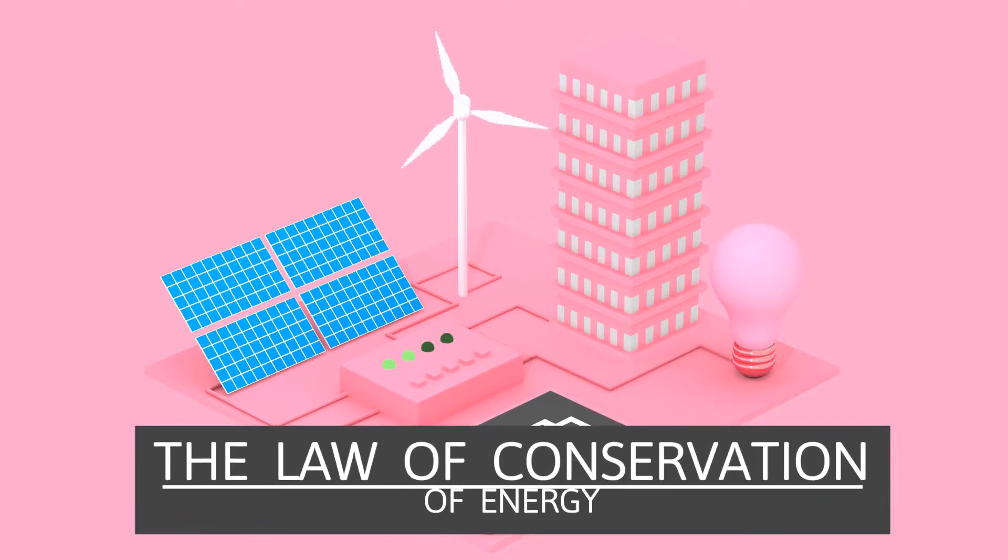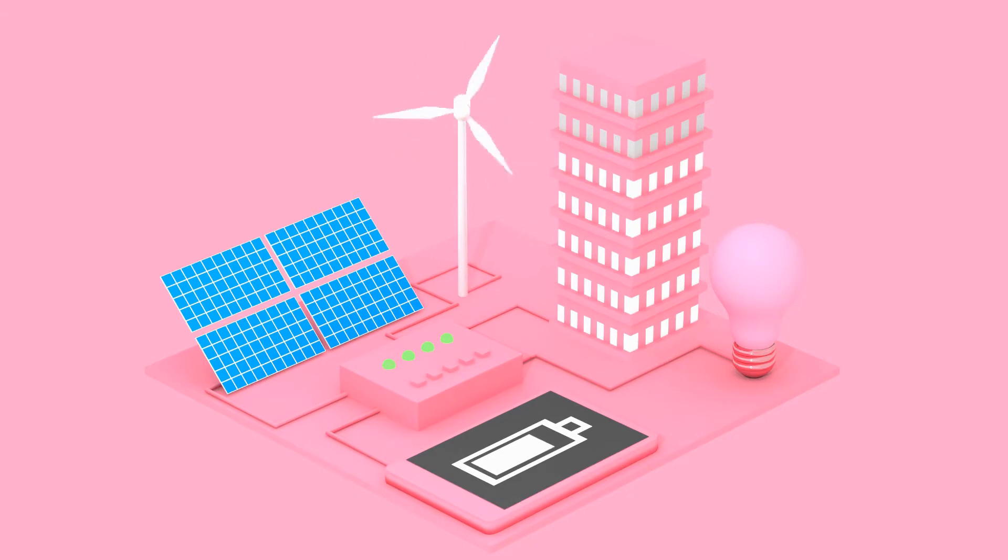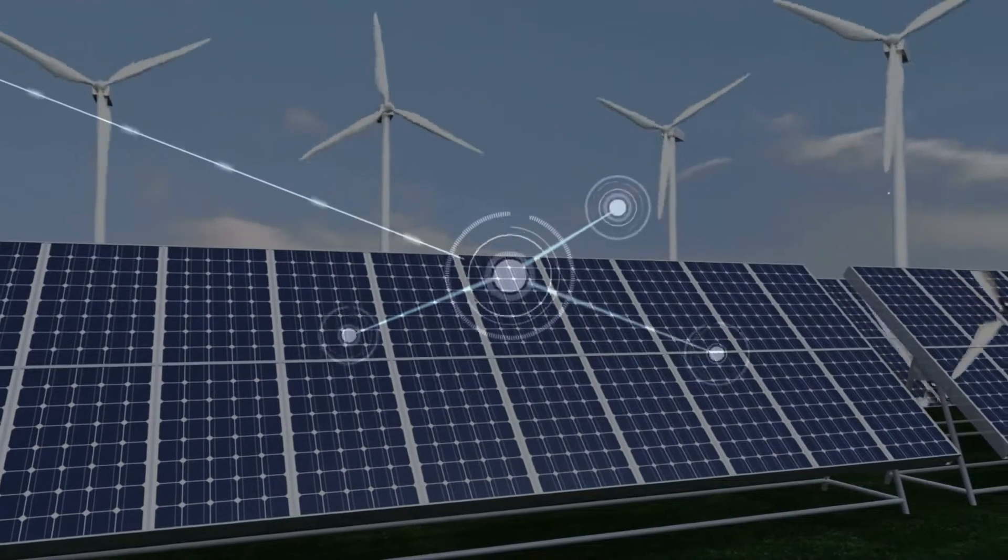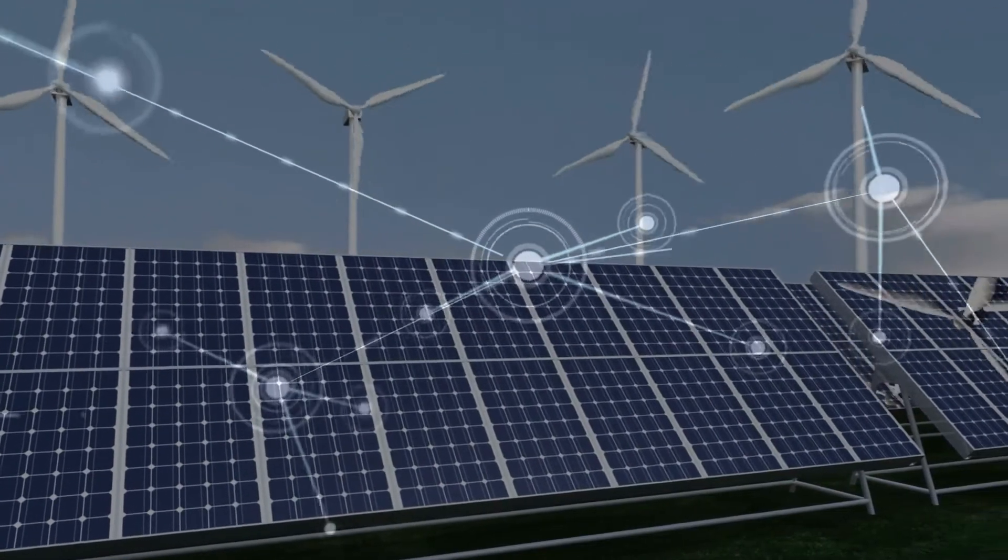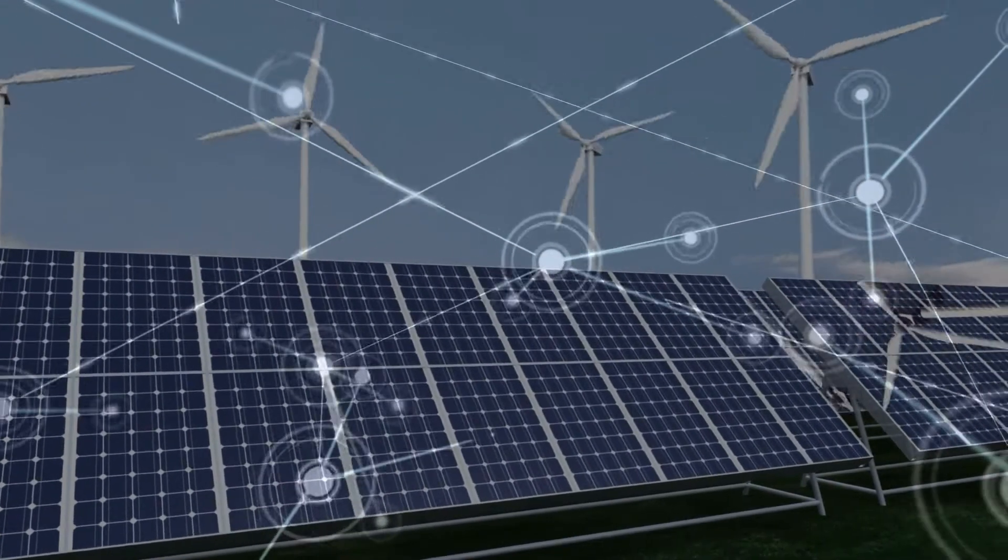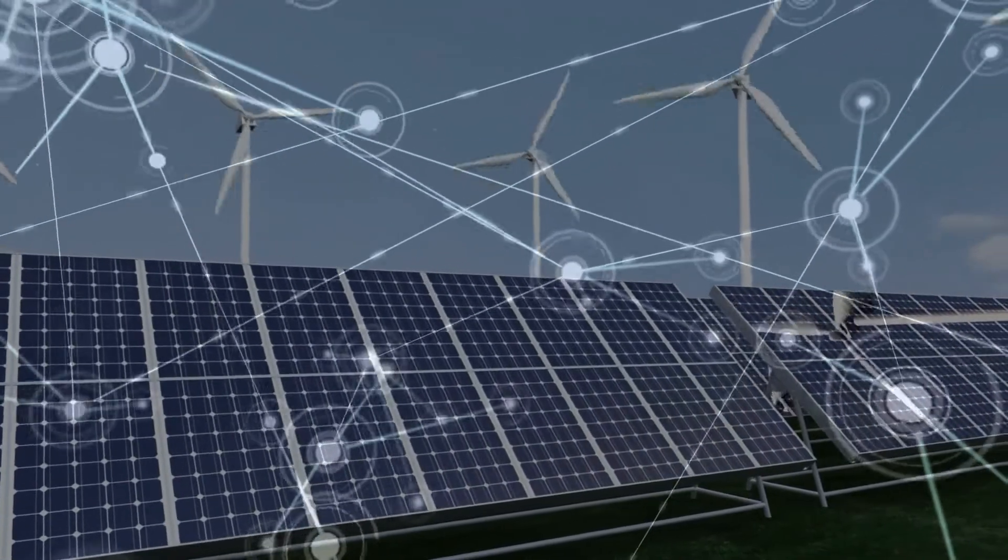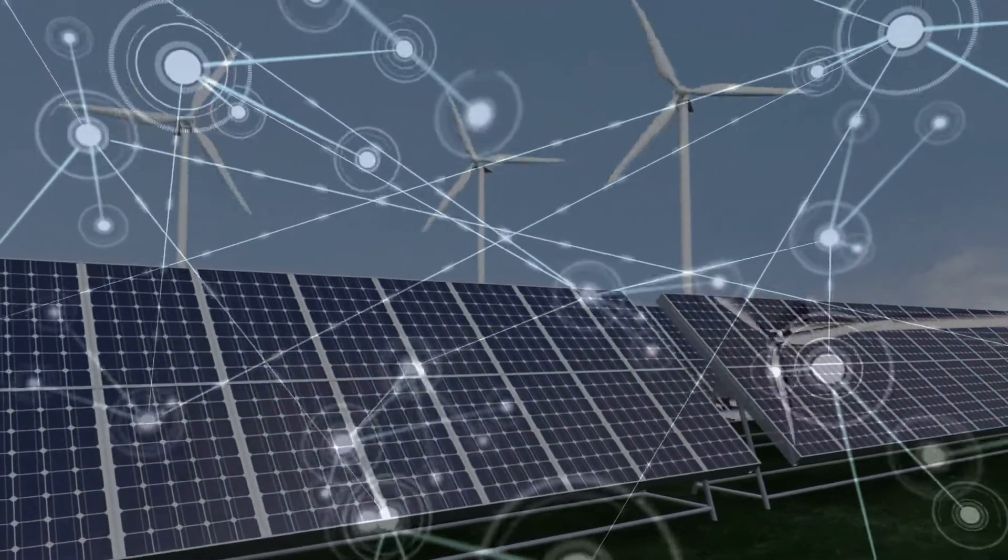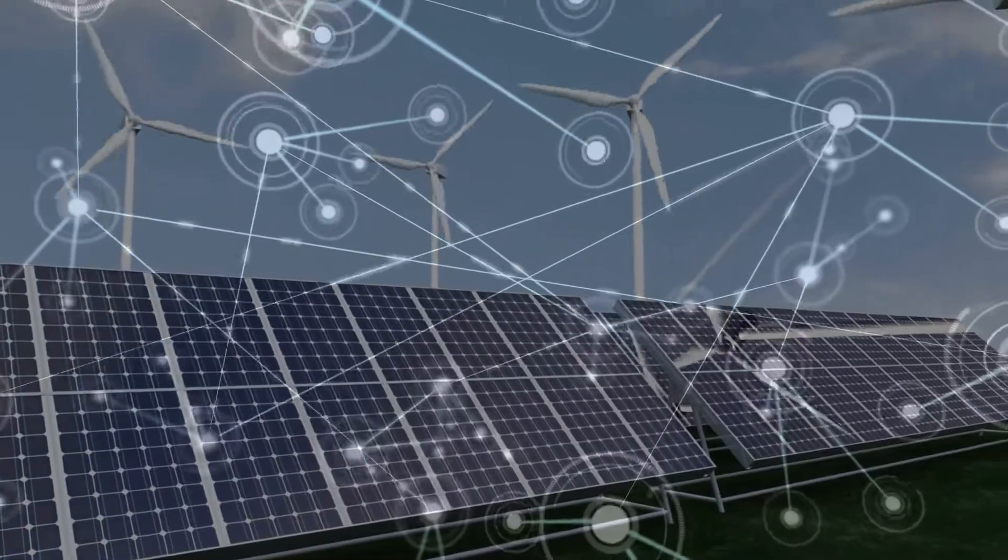The law of conservation of energy is one of the most fundamental laws in physics. It states that no matter what happens, you cannot destroy or create energy. For example, it can change from heat to kinetic, kinetic to chemical, and chemical to potential. This principle can be seen everywhere, like when examining plants through the process of photosynthesis or studying hydroelectric dams which generate electricity through water flowing over turbines generating power via a generator at its base.